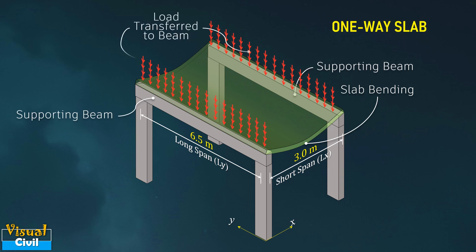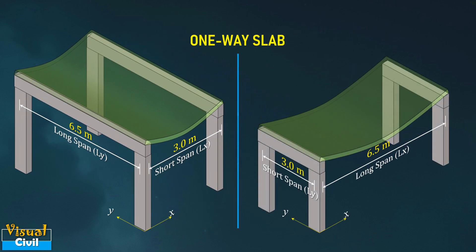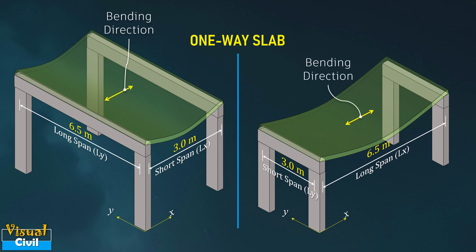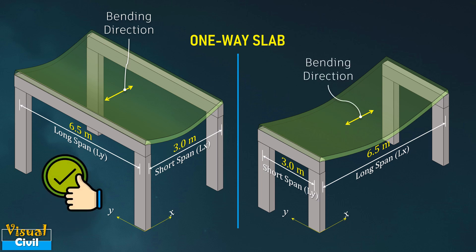In this case, the load from the slab is transferred to the supporting two beams equally. It is always preferable to allow the bending of the slab along the shorter span to economize the quantity of concrete and steel.